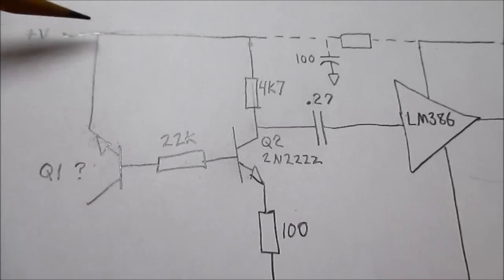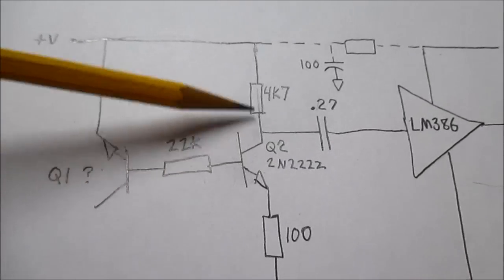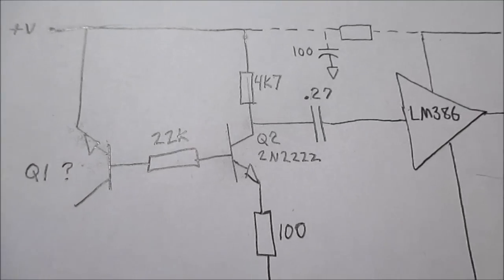Or if it's not turned on enough, this junction is not conducting, collector voltage will be at the supply rail, and again, it's not going to amplify.